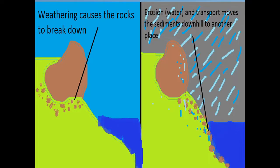Weathering causes the rocks to break down. These are called sediments. Erosion and transport moves the sediments downhill to another place.